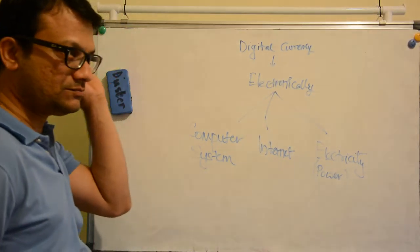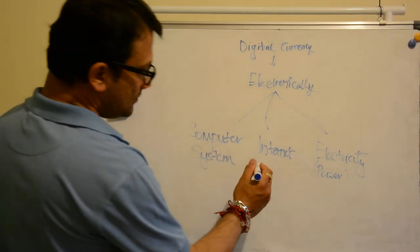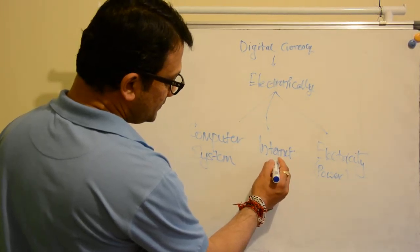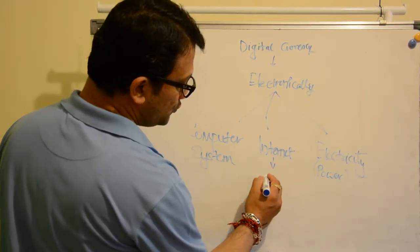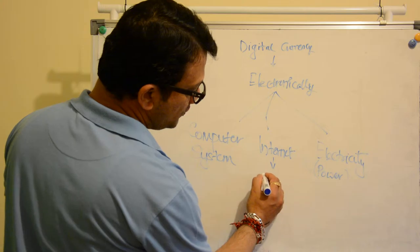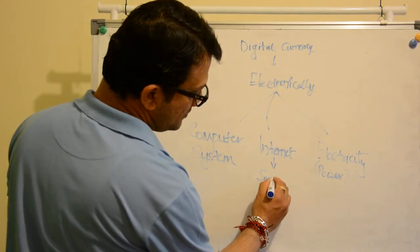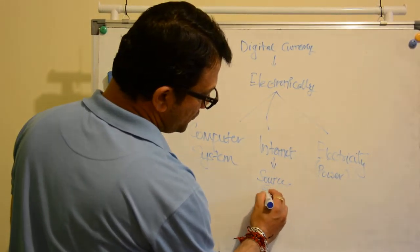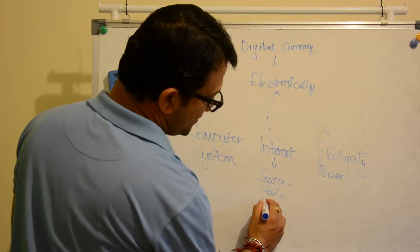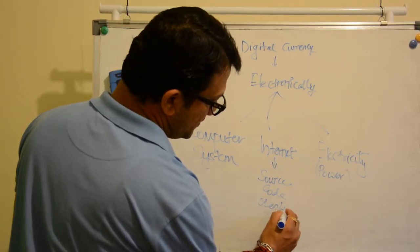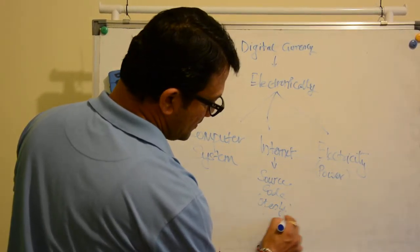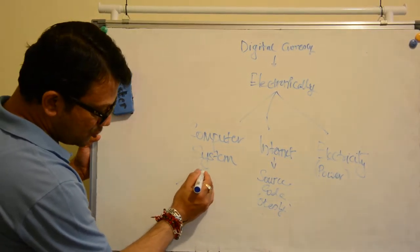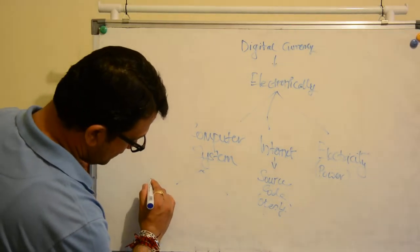Internet is used to download a source code which is openly available, and computer system has two parts. One